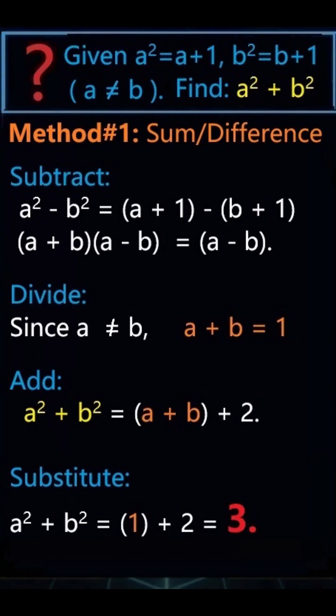Method 1: subtract equations. That gives a plus b times a minus b equals a minus b. Since a is not equal to b, divide by a minus b. So a plus b equals 1.